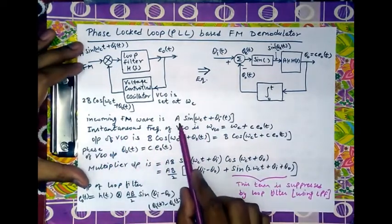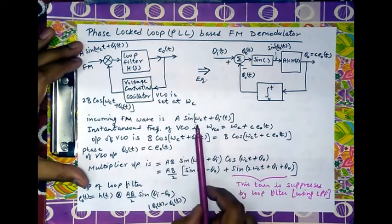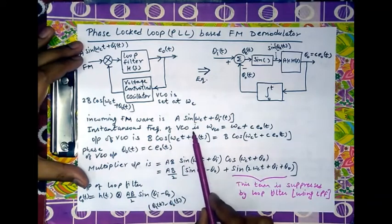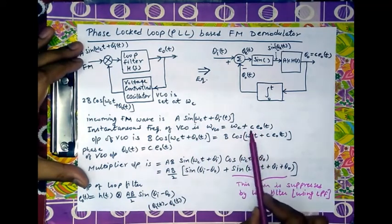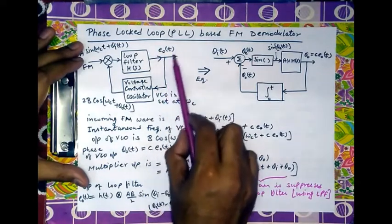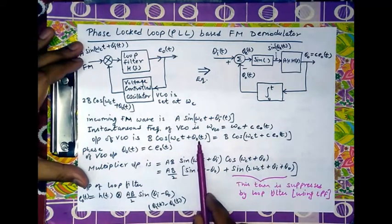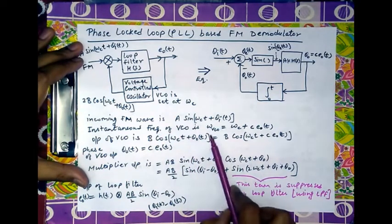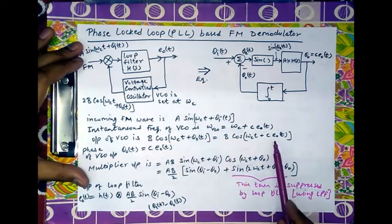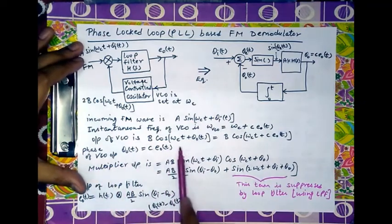The incoming FM wave is A·sin(ω_c·t + θ_i(t)), where θ_i(t) is the instantaneous phase varied in accordance with the modulating signal. The instantaneous frequency of the VCO is the carrier frequency plus a phase change c·e_0(t), where the change in phase depends on the PLL output e_0(t) with constant c. The VCO output is B·cos(ω_c·t + θ_0(t)), where θ_0(t) = c·e_0(t) is the phase deviation of the VCO output.